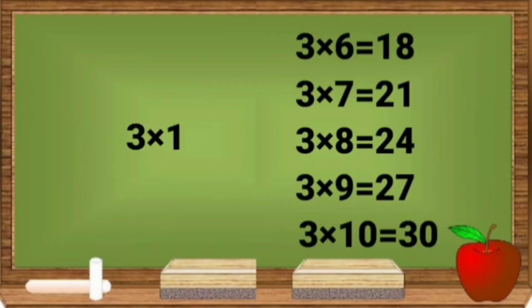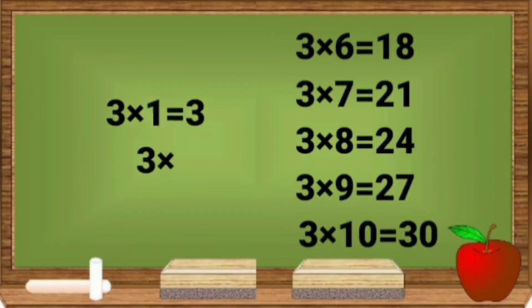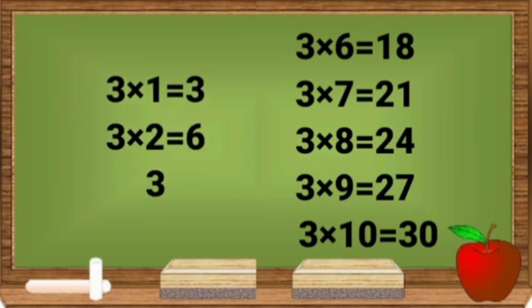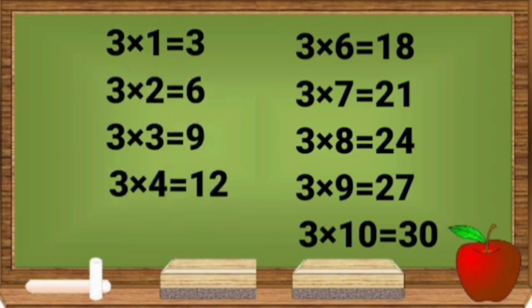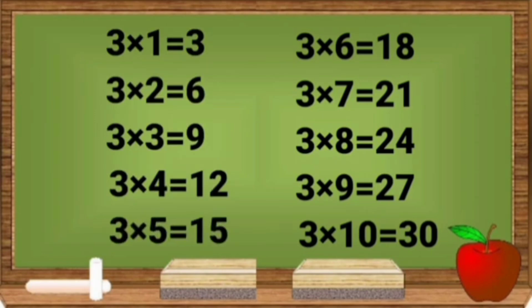3 1s are 3. 3 2s are 6. 3 3s are 9. 3 4s are 12. 3 5s are 15.